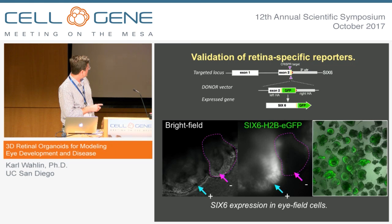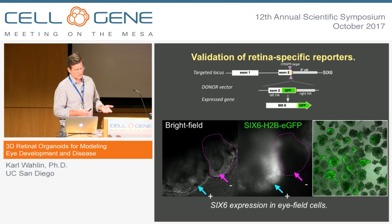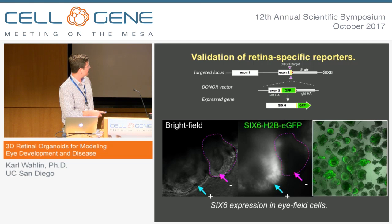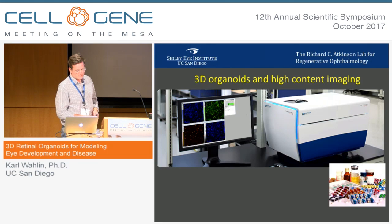To validate this cell line, we differentiated it with our protocol. Some of the vesicles are GFP-positive, while others are GFP-negative — which is not a big surprise, since we already knew not all vesicles we develop are retina. As I said, there's forebrain and retinal structures as well. We typically collect and discard the GFP-negative ones and keep the GFP-positive ones.